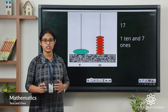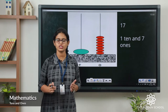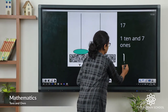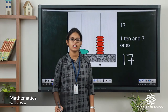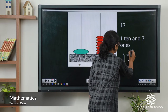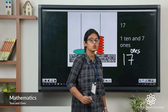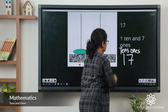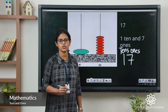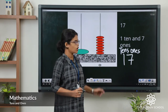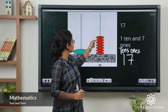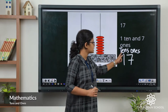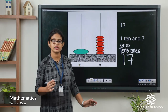Now let's take number 17. So 17 is a two-digit number. The place value of 7 is ones and 1 is tens. So in ones place we will draw 7 beads: 1, 2, 3, 4, 5, 6, 7. And in tens place we will draw 1. So 1 ten and 7 ones makes which number? 17.